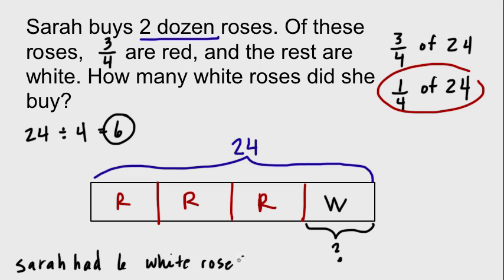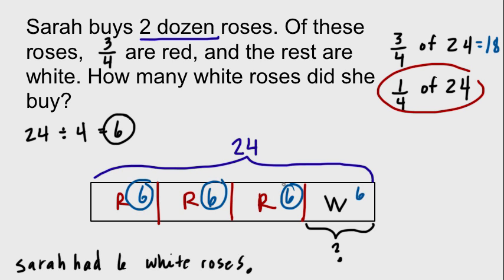To expand this further, if she had six white roses, how many red roses did she have? Each part is six, so six times three is 18 — three-fourths of 24 equals 18. That's how you use a tape diagram. For bigger numbers and word problems, it's a quick, easy way to visualize the problem, make sense of it, and realize fractions aren't as hard as they might seem.